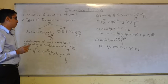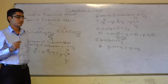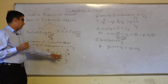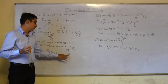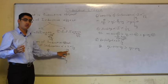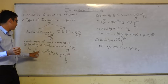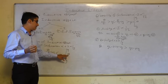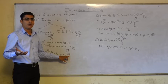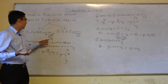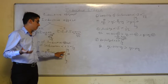Stability of carbocation is proportional to plus I effect and inversely proportional to minus I effect. Due to plus I effect, the electron density which decreases on the carbon will get charges from the methyl group. So tertiary carbocation is more stable than secondary carbocation, which is more stable than primary carbocation. When we add a methyl group, which has a plus I effect, its stability increases and energy also decreases.